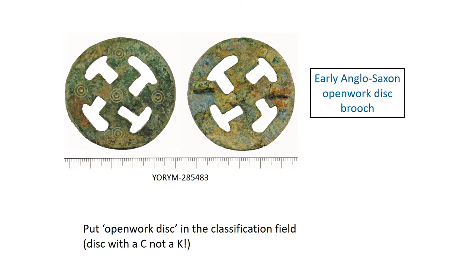There's a less common variant of the disc brooch which is openwork — still large and flat, with ring and dot decoration or stamps, but with cutouts often of T, L or V shape making generally a cross or swastika shape. There are less than a dozen of these on the database so far — it's worth distinguishing them in the classification field, so put 'openwork disc' in the classification field. Also do check your spelling — don't use 'disk' with a K, as that is the American spelling.